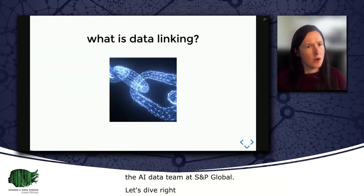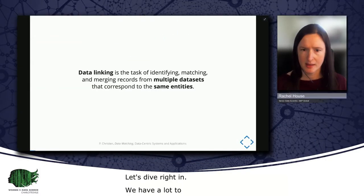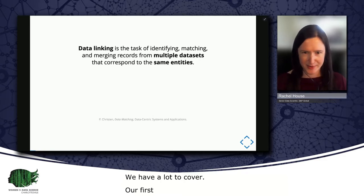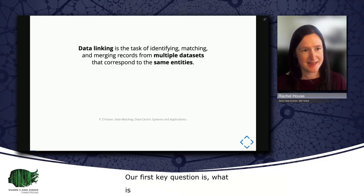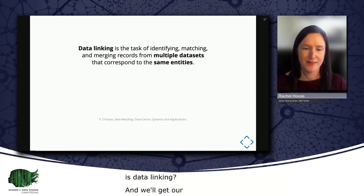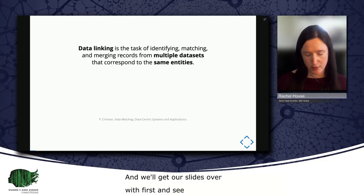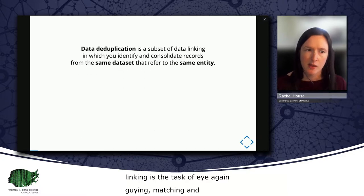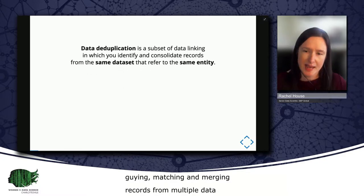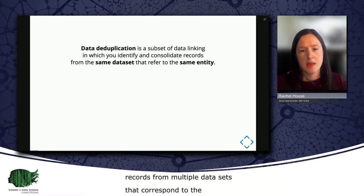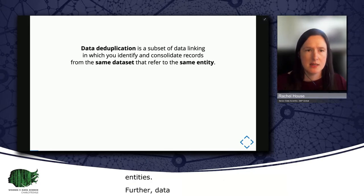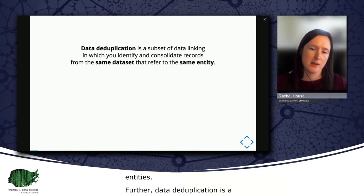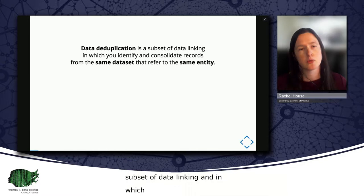Our first key question is, what is data linking? We'll get our wordiest slide over with first and see that data linking is the task of identifying, matching, and merging records from multiple datasets that correspond to the same entities. Further, data deduplication is a subset of data linking. And in data deduplication, the objective is to identify and consolidate records from the same dataset which refer to the same entity.